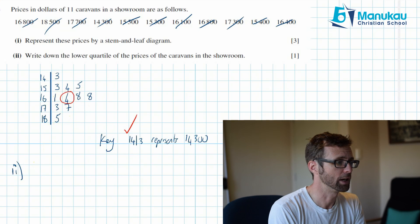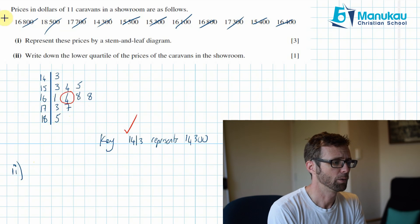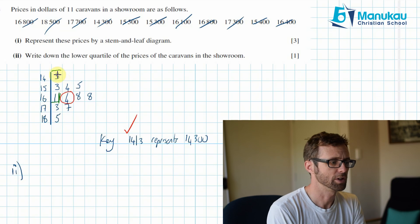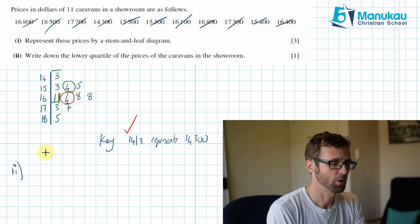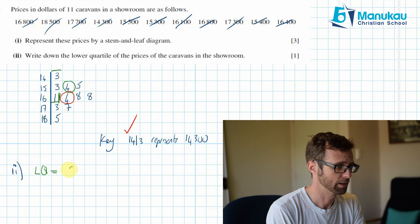Now, to work out the lower quartile, we ignore that and we're looking at everything from here to here. So you see we've got 1, 2, 3, 4, 5 items of data and our middle one is this one here. So this is going to be our lower quartile. So we would say LQ or lower quartile is equal to, now what does that represent? We want to write that so it's, well, we're dealing with dollars, I think.